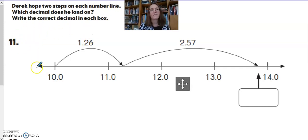Write the correct decimal in each box. Well, here's Derek at number 11. He's on a number line. It looks like he started right here at 10. So as I think about this number line, I've got 10 and no tenths. So that tells me I'm probably dealing with decimals.